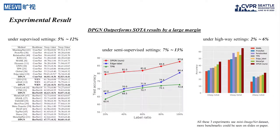In extensive experiments on few-shot learning benchmarks, DPGN outperforms state-of-the-art results by 5% to 12% under supervised settings, and 7% to 13% under semi-supervised settings.